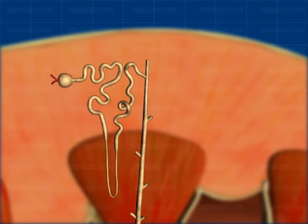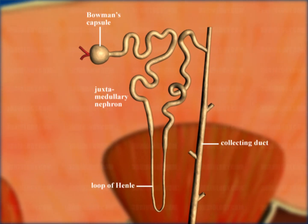The renal corpuscle is made up of a cluster of capillaries named the glomerulus and a sac-like structure called Bowman's capsule around the glomerulus. The renal tubule is the other part of the nephron that starts at Bowman's capsule and ends at the ducts of the kidney.